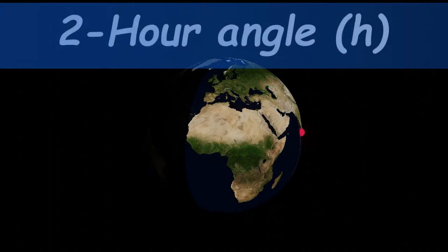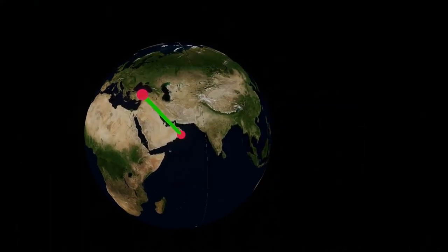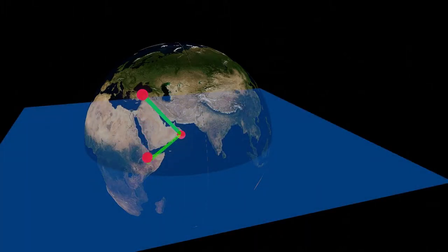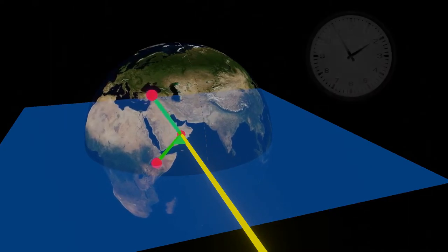Second is the hour angle. If you project the line connecting the center of the Earth with your location onto the plane containing the sun and the Earth, and then join the center of the Earth to the center of the sun, you will get another line. The angle between these two lines is called the hour angle. Unlike the latitude angle, this angle not only depends on your location on the Earth's surface but also depends on time.